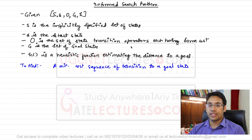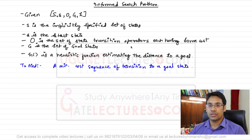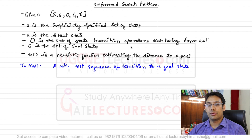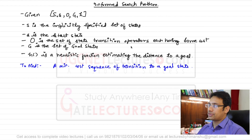There may be some cost associated with those operators, and sometimes no cost is associated. For example, in breadth-first search and depth-first search, operators had no cost. Later we discussed operators with costs, such as in the Traveling Salesman Problem, where operators have costs and we wanted to find a solution that minimizes the total cost.